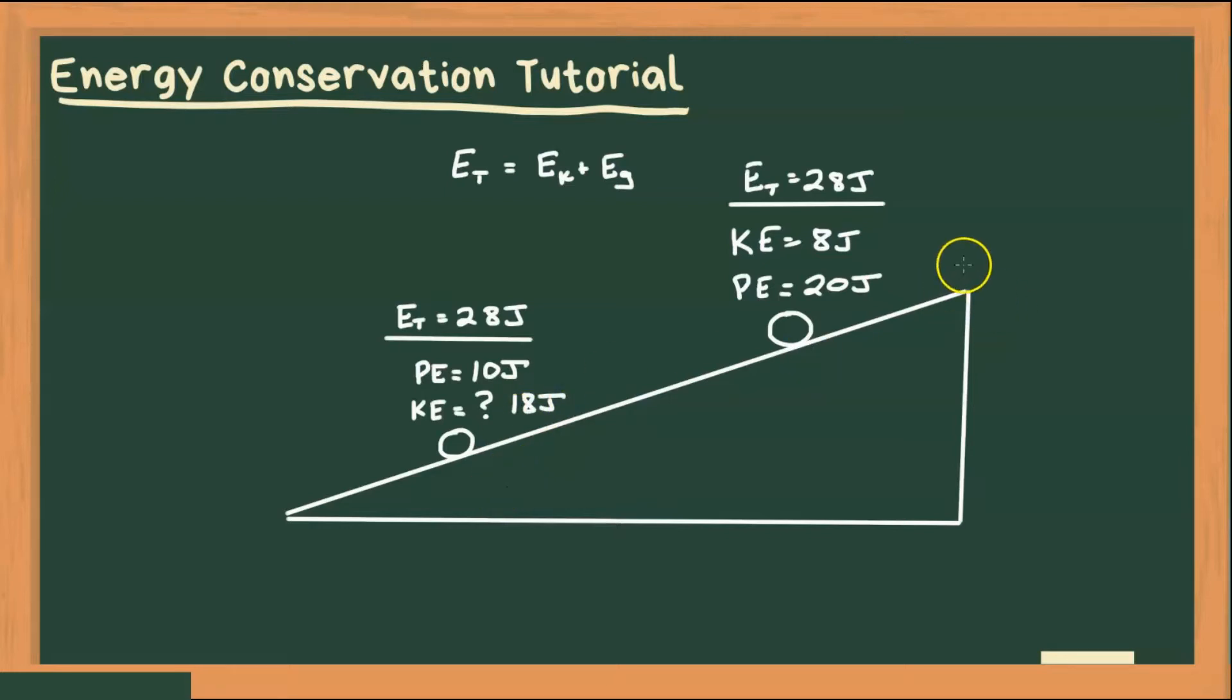Alright, well what if I had the ball all the way up the top, and it started at rest, so the kinetic energy was 0 joules. Could you tell me how much potential energy there is? In this case, 28 joules. Why? Because again, our total energy must be constant, must be conserved at 28 joules for this example.